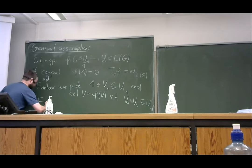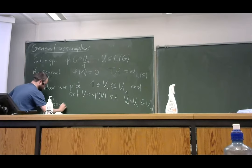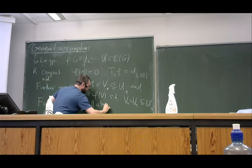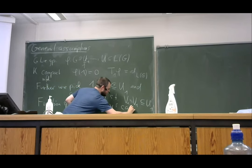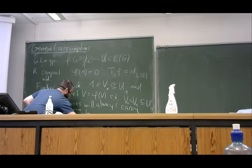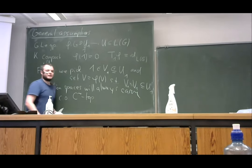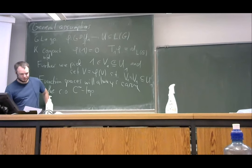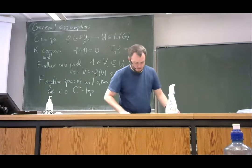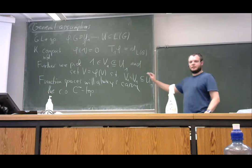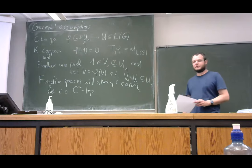One last remark: function spaces. We are always carrying the compact-open C∞ topology, just in case there are any questions. In the end, since we announced we get a canonical manifold structure, we also want to know that the topology is the right one. Now we have all these prerequisites — let's start with our construction.